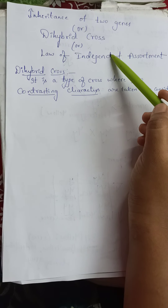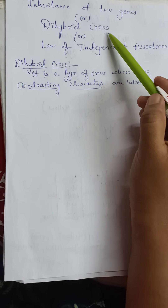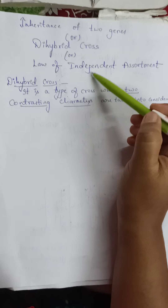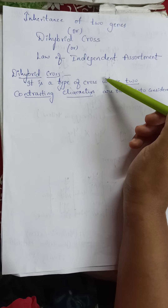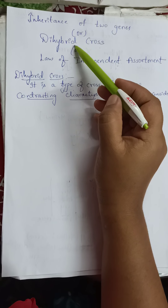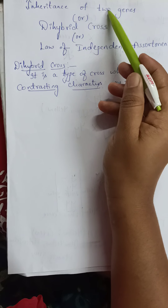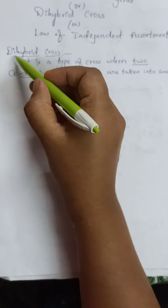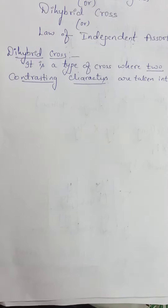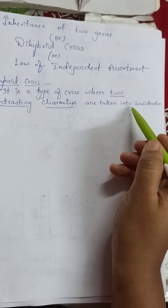Here are the three names for dihybrid cross — it is also very important. For the law of independent assortment there is one statement that we will discuss after the example, so it will be easy for you to understand. Now we will see why it is called inheritance of two genes or why it is called dihybrid cross. As the name indicates, 'di' means two — it is a type of cross where two contrasting characters are taken into consideration.